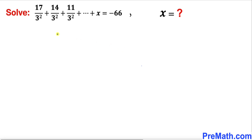Welcome to pre-math. In this video we are going to solve this given equation for x: 17 divided by 3 squared, plus 14 divided by 3 squared, plus 11 divided by 3 squared, plus all the way to x, equals negative 66.